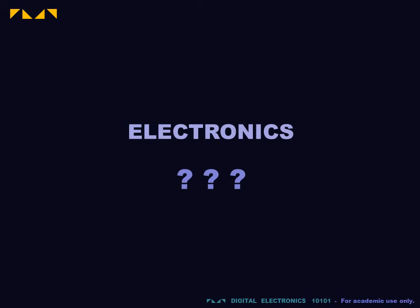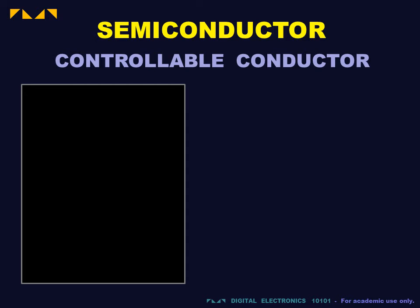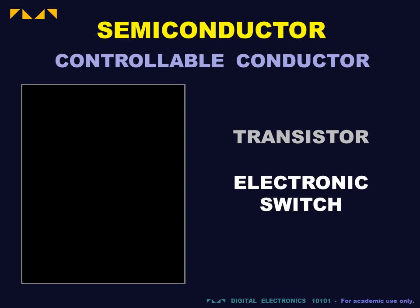We will now study the electronics part of digital electronics. Digital processing is performed by transistors made from semiconductors. A semiconductor is a material whose conductive properties can be controlled electronically. A semiconductor transistor is a device that uses this property to create an electronic switch.